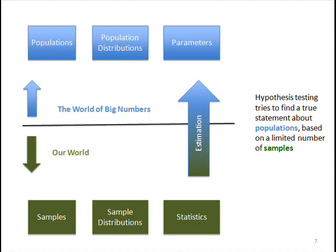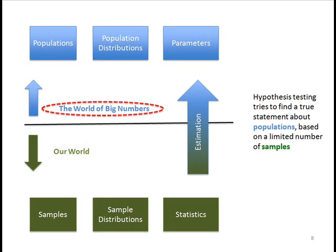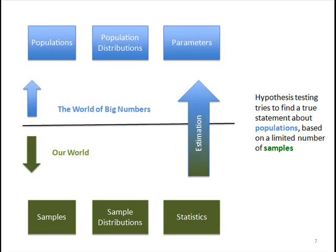We are trying to get information from our own world so that we can make a conclusion about something larger than our set of samples. We can identify two different worlds: our world — down here — and the world of mathematics, or as I like to call it, the world of big numbers. If everything you were interested in lived in our world, so that you had a convenient way to measure every single entity of interest, then we would not need to make an inference.